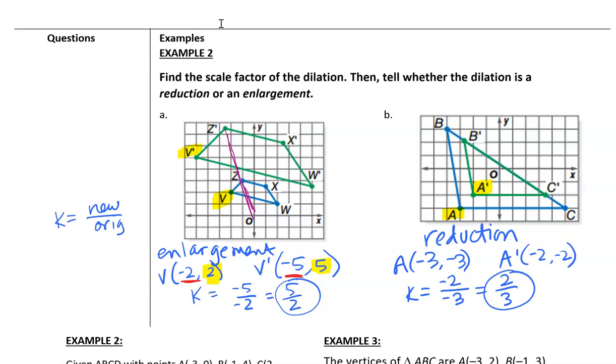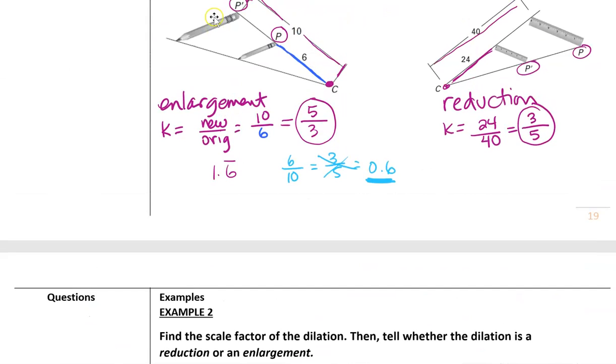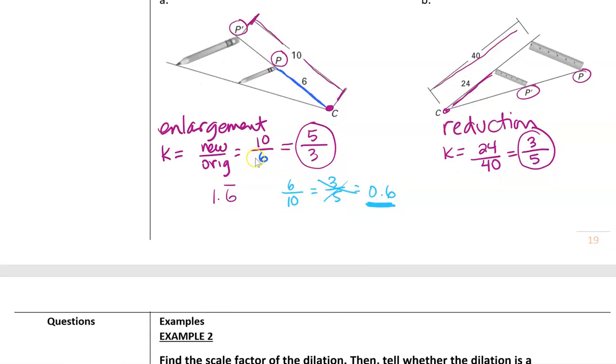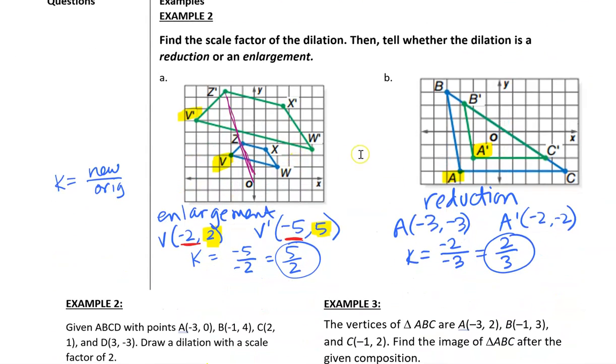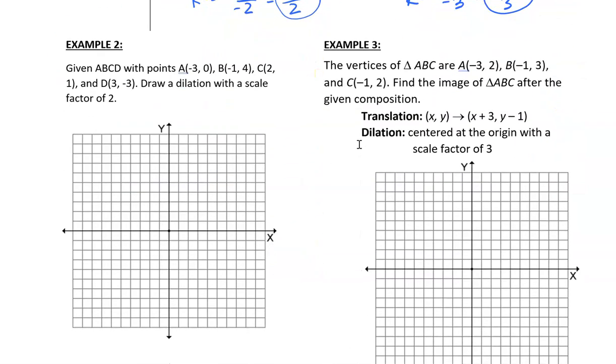So that would be how I deal with determining scale factor on a coordinate plane. Simply look at the coordinates. If you're off a coordinate plane, we want to look at the distance from the center. But by looking at the coordinates, it's really giving us the distance from the center. Because we're looking at that x, y.